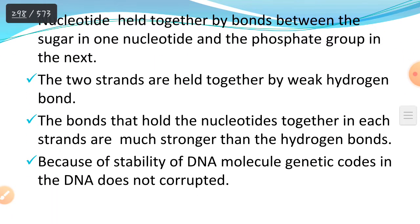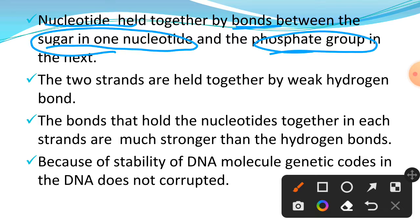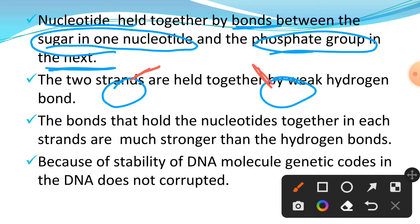Nucleotides are held together by bonds between the sugar in one nucleotide and the phosphate group in the next nucleotide. Each nucleotide connects to the next through its sugar and phosphate group, forming the strand.